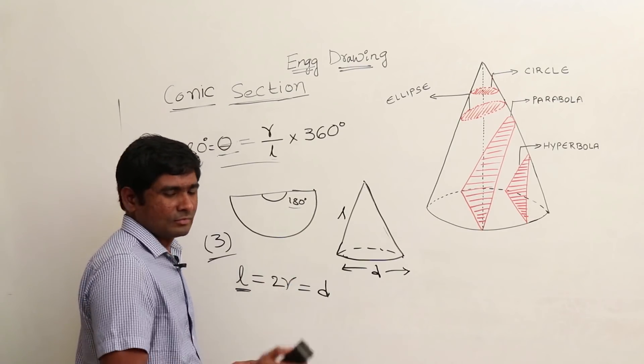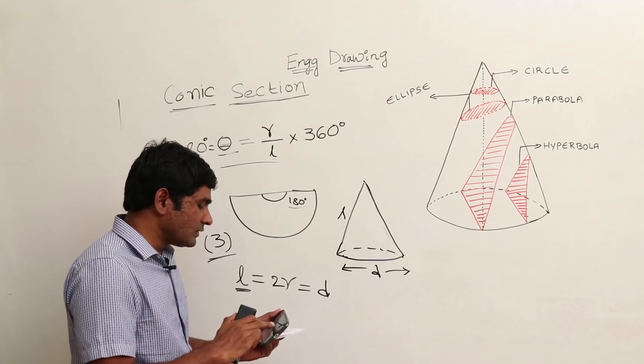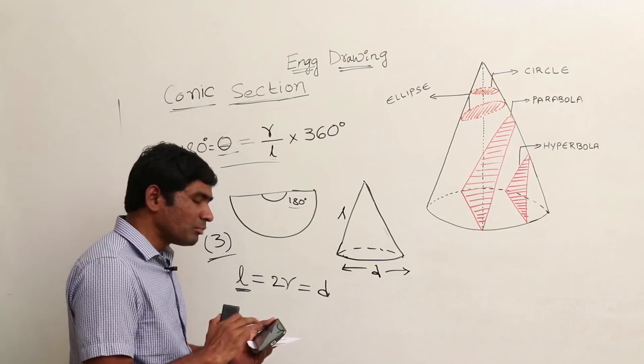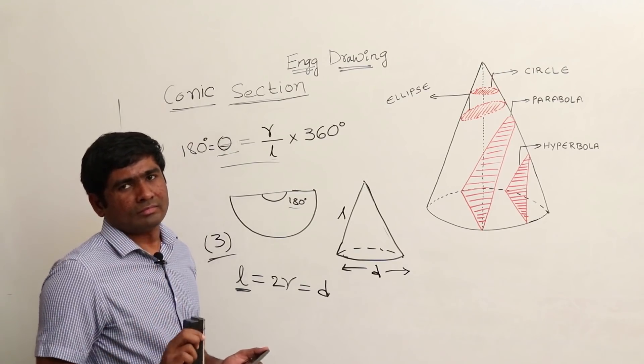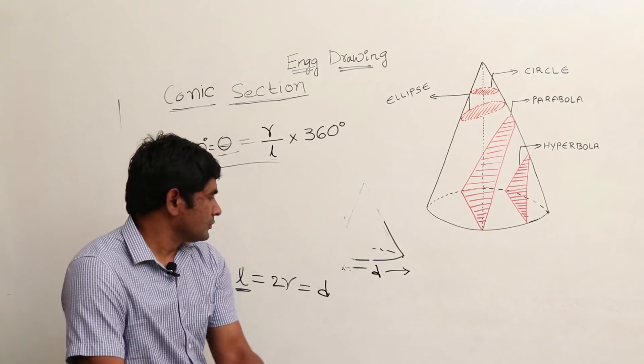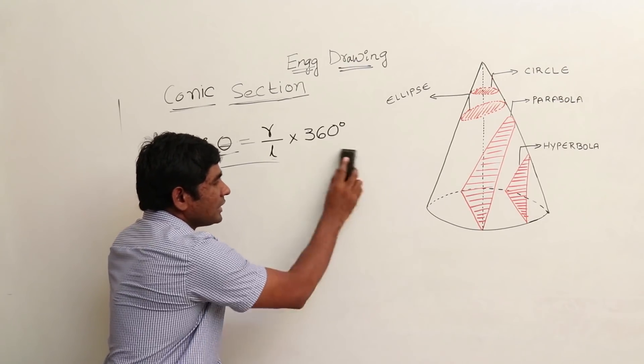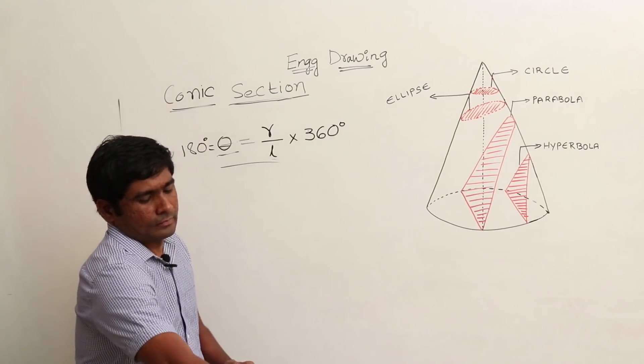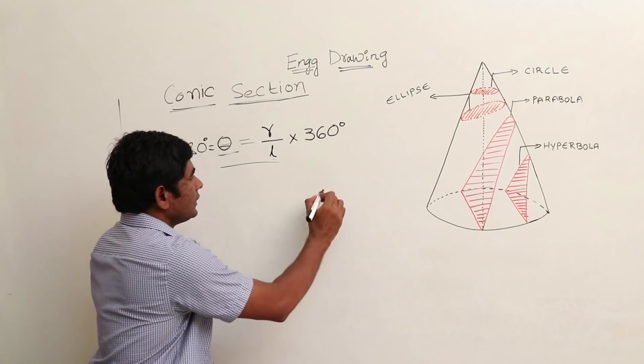This is a last year question, so it is very easy. Now one more question based on the same concept: question number 10 in Set A of 2016. The question is: if a thread is bound around a cone starting from a point on the base and brought back to the same point, then the shortest possible length of the thread is equal to?